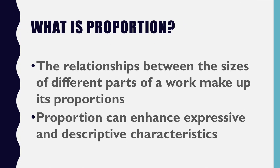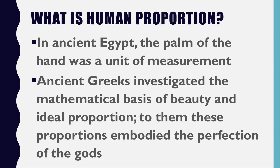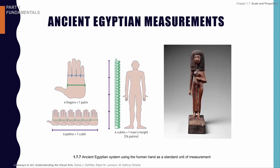Now let's look at proportion. That's when you have one object and you're comparing the parts of it to each other to know if it looks proportional or not. The Egyptians really wanted their sculptures of figures to be proportional.